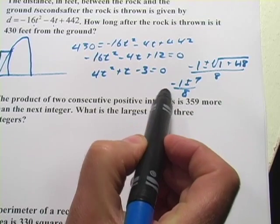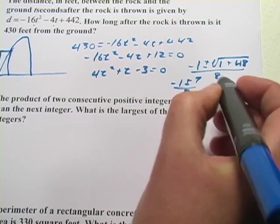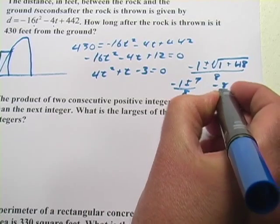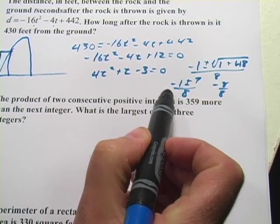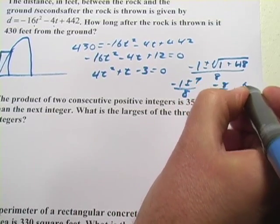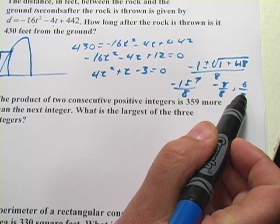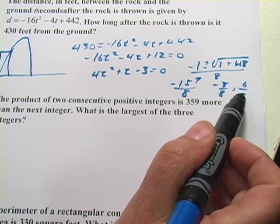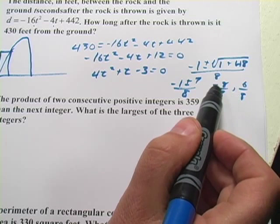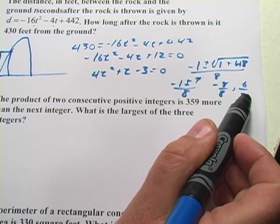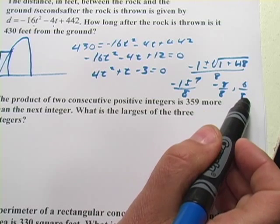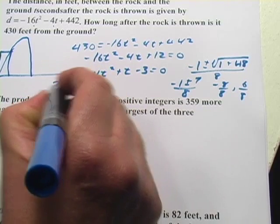And let's see, -1 - 7, so that would be -8 over 8. Or it would be positive 6 over 8. So it's either -1 or 3/4. And since we're looking at the time here, it's not going to be a negative time. So 3/4, 6/8, 3/4 of a second looks like our answer.